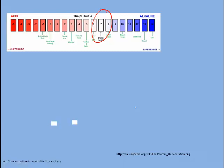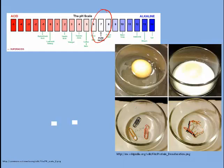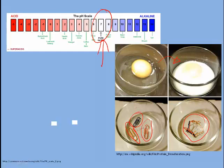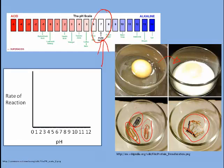Most enzymes do function ideally at pH 7. For example, if you add an acid to an egg, you'll see that it will denature. The analogy below is showing all these paper clips, which are meant to represent the proteins in the egg. When they are affected by the pH change, they actually change their shape and the way they interact with each other. We don't want that happening to the enzymes in our body. So most enzymes function best at a neutral pH.